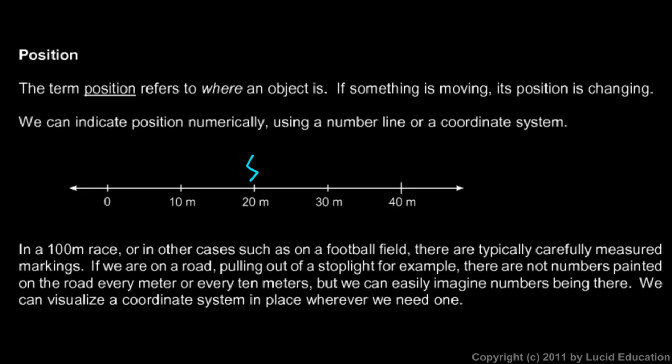So if this guy were running in a race here, right here you would say his position is at 20 meters, and we usually use a variable. We might say x, his position is 20 meters, and so the variable x indicates position. Or sometimes you see d used, d for distance. In this case, he's gone 20 meters from the start here.